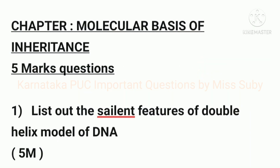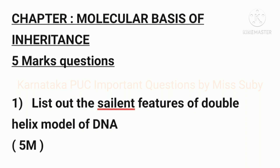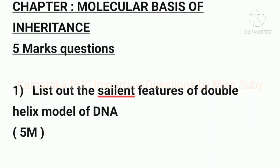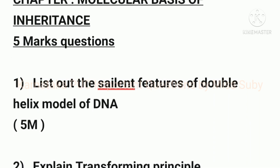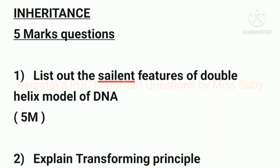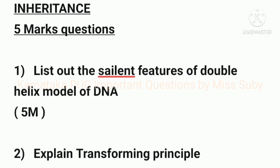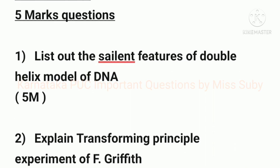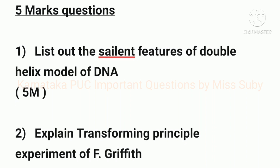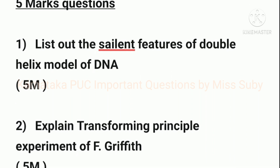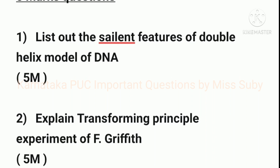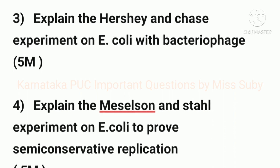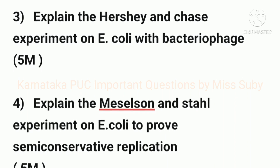Let's start with the five mark important questions from chapter Molecular Basis of Inheritance. The first question is: list out the salient features of the double helix model of DNA — it carries five marks. The second important five mark question is: explain the transforming principle experiment of Griffith.